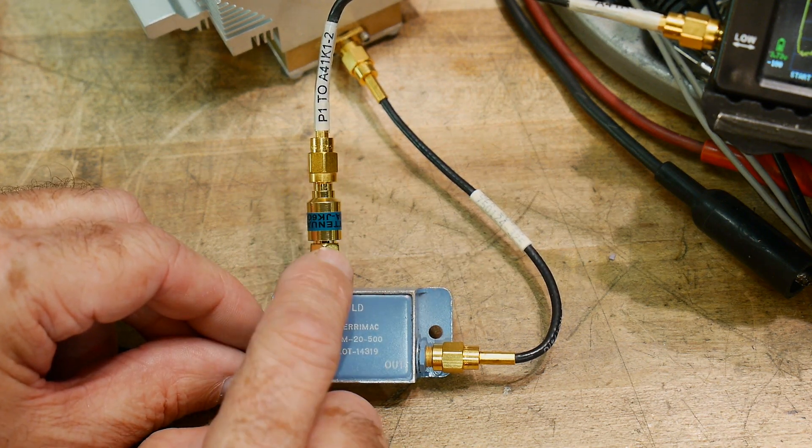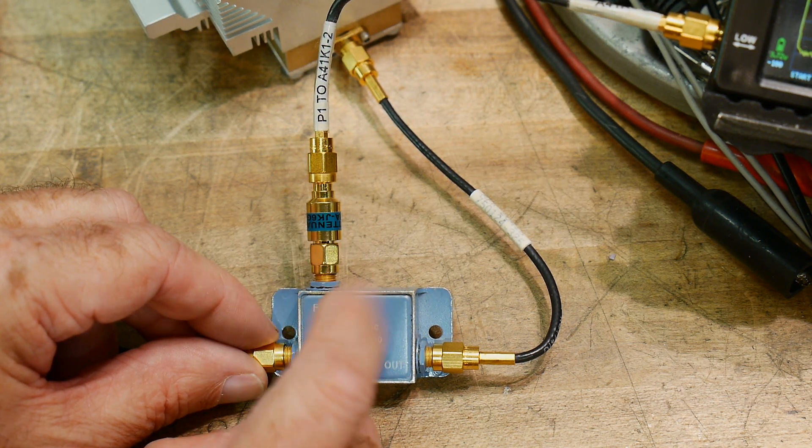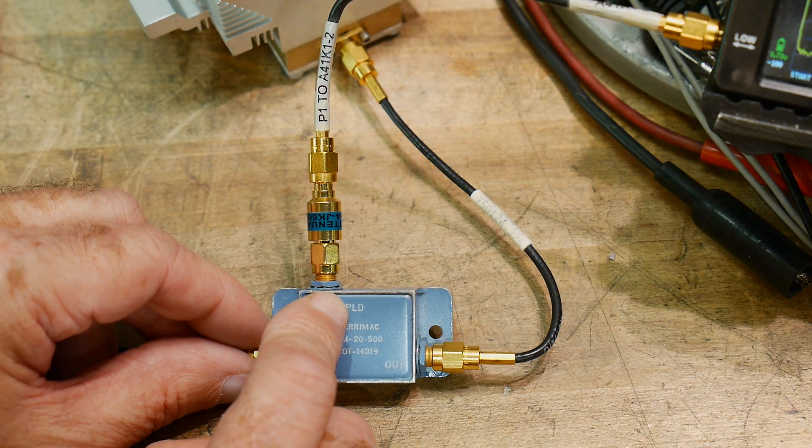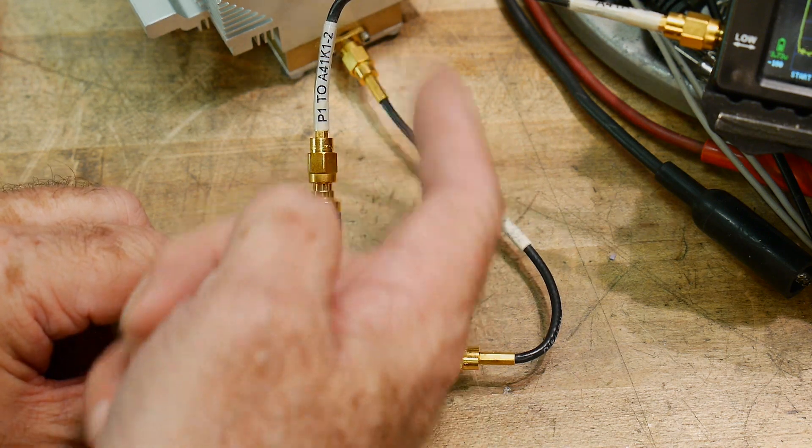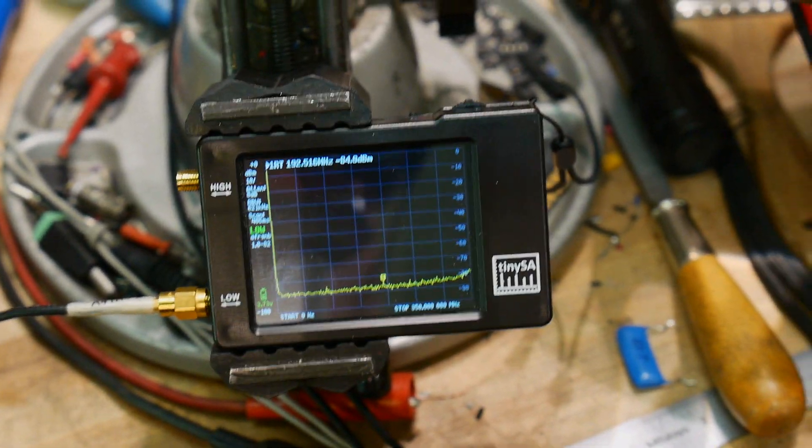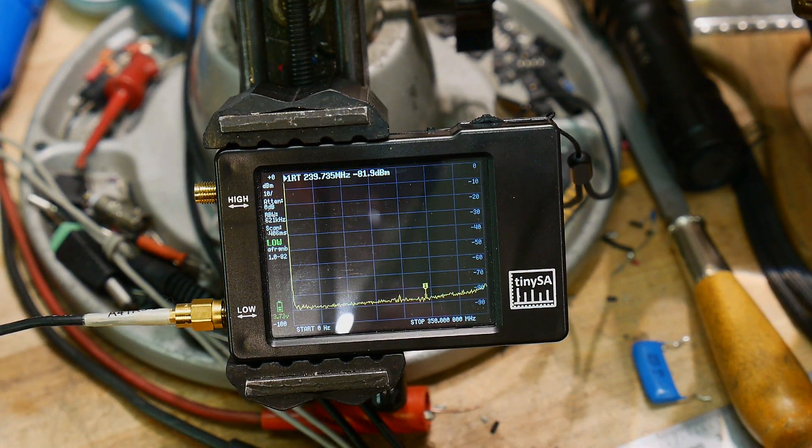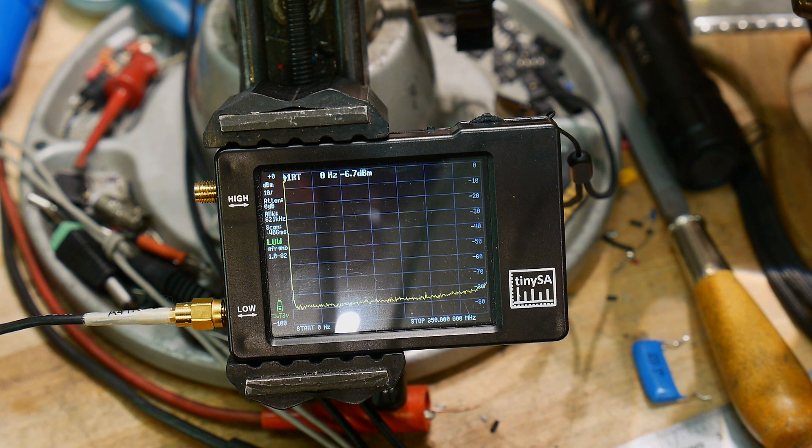And so if you start with 36.5 and you subtract 13, you get to 23.5. And then you subtract 30, you get to minus 13.5. So we only have minus 13.5 coming out of this connector. Now that connector is going to go into the spectrum analyzer.